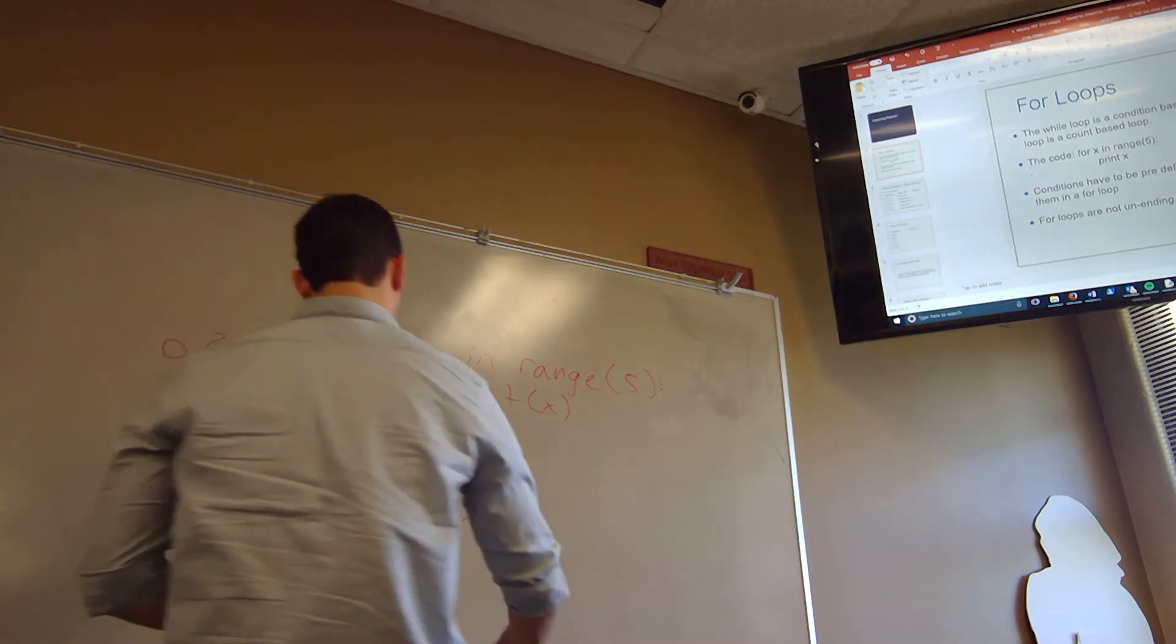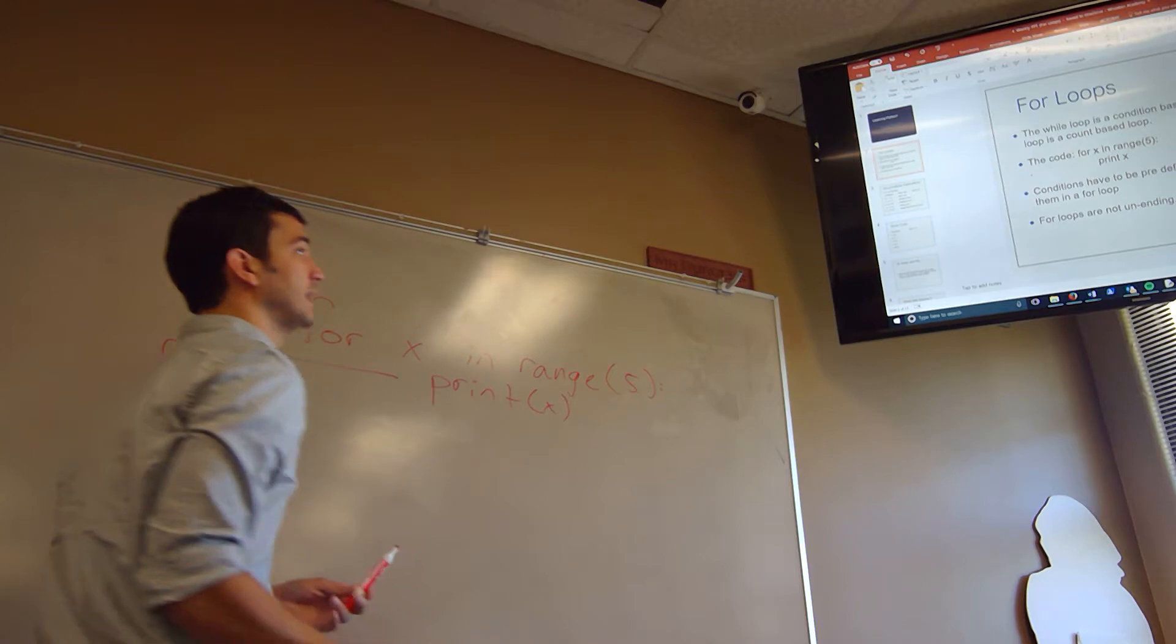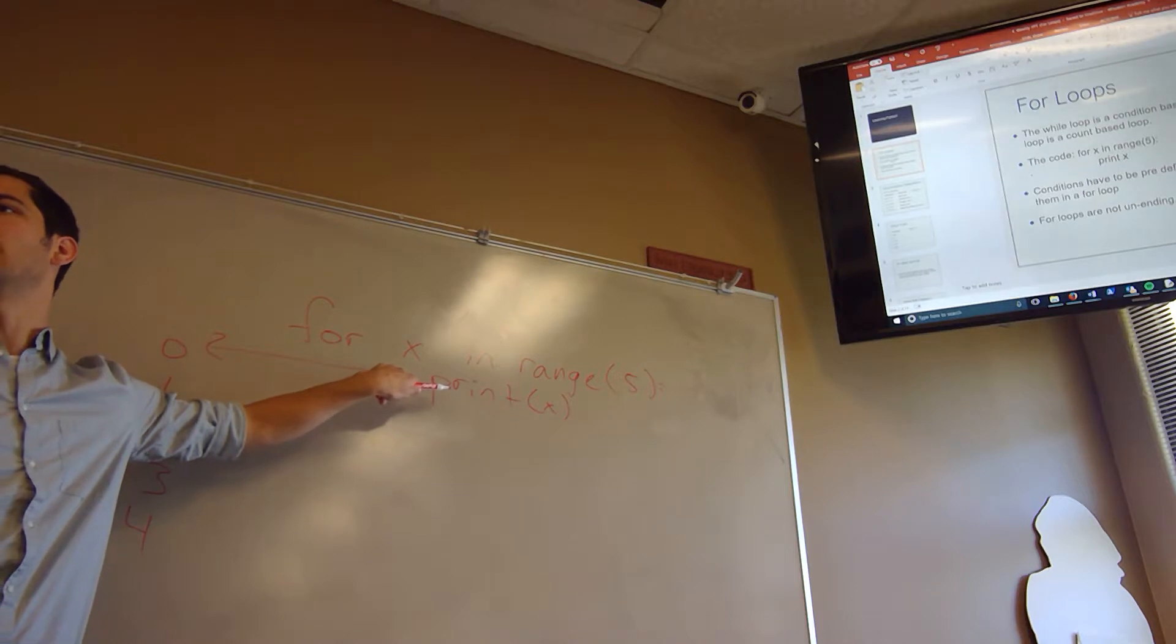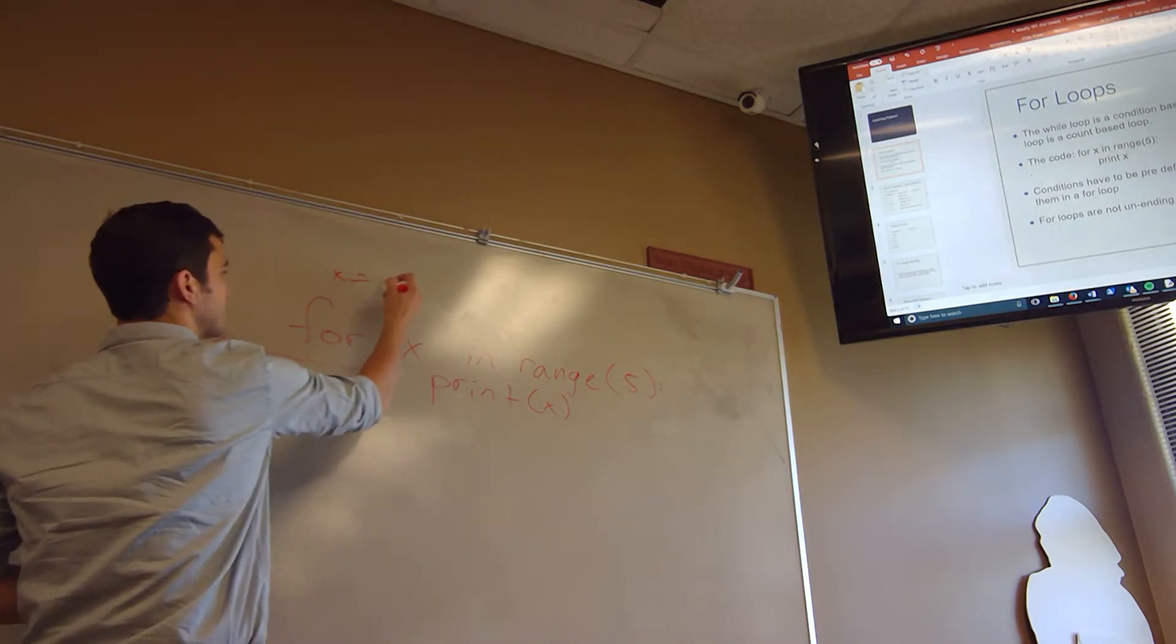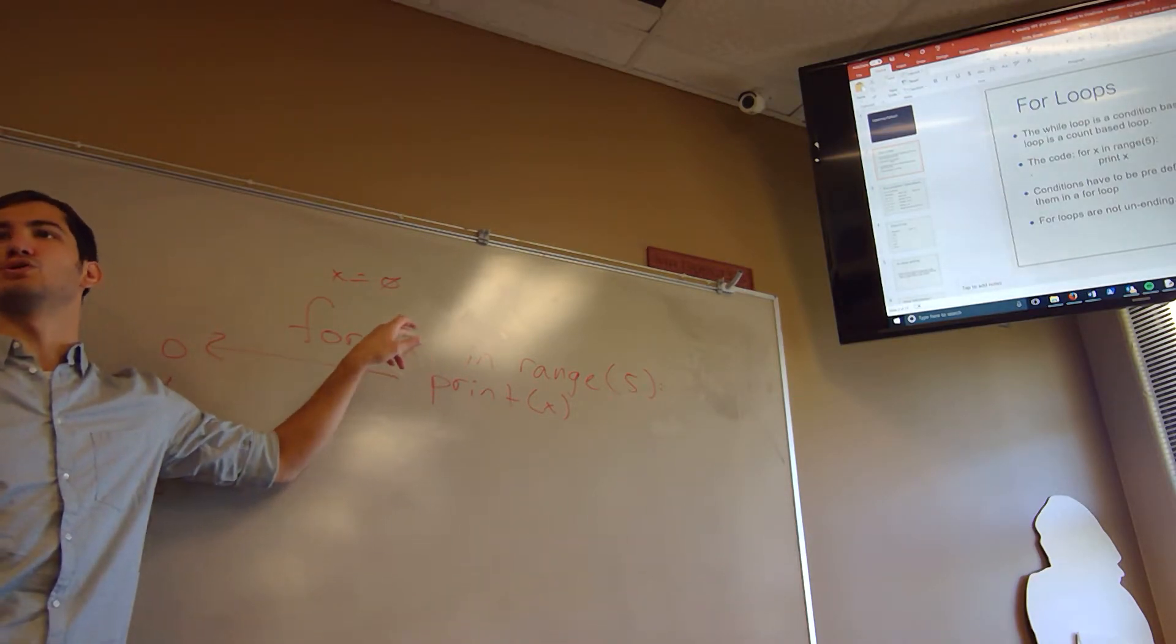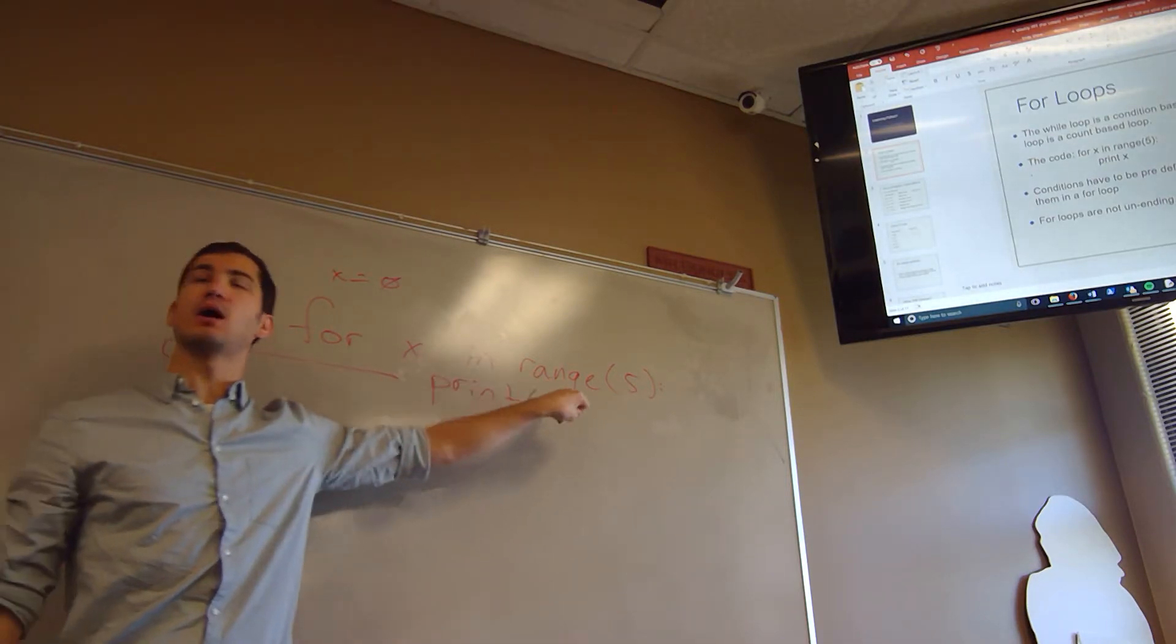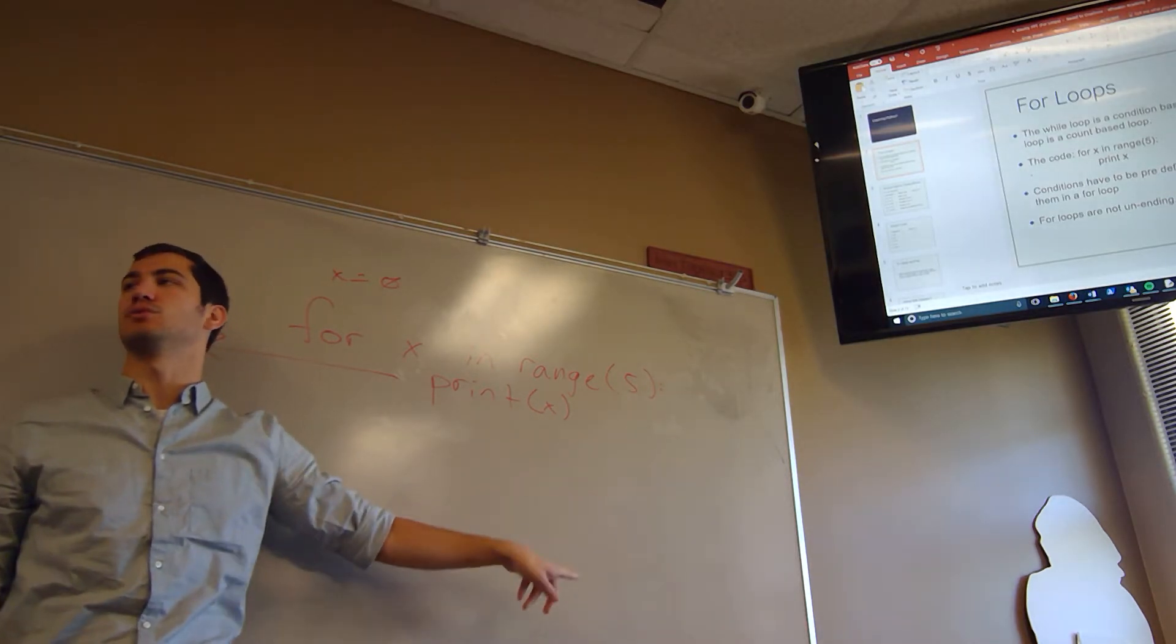Oh, and you also have to define, you actually don't need to define, it depends on what you're talking about. This x does not need to be defined before you get into the loop. So I don't need to have x is 0 before I have this loop. Because what this is doing is you are creating x in this line of code. So x is going to become 0, 1, 2, 3, 4, depending on which iteration of the loop you're in.